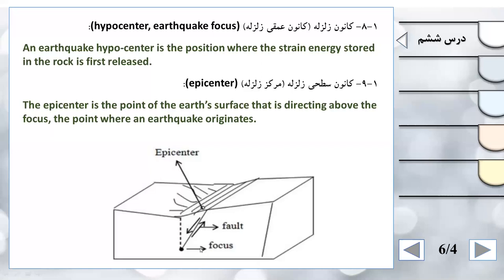از پوسته زمین تا سطح زمین Abrupt داریم. این Abrupt باعث می‌شود تشدید و لرزه‌نگاری که در سطح زمین داریم و جذب انرژی در این دو نقطه با هم فرق کند. معمولاً در پوسته تشدید می‌شود و در آنجا زلزله شدیدتری به ساختمان وارد می‌شود، در حالی که زلزله در قسمت Focus خفیف‌تر است. The epicenter is the point on the Earth's surface - کانون سطحی زلزله.